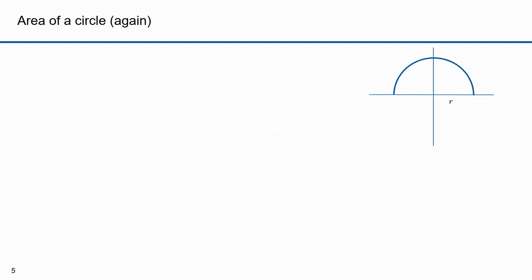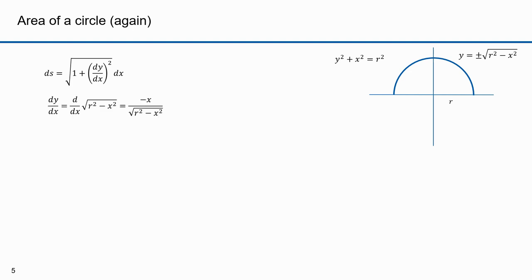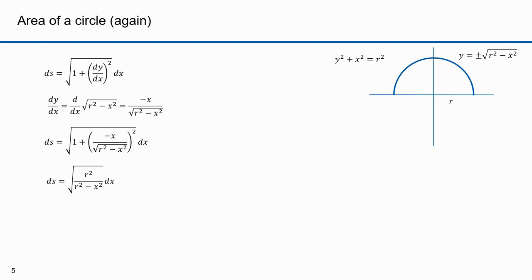Here I'll compute the surface area of a sphere with radius r. Starting with a semicircle defined by y² + x² = r², solving for positive y gives y = √(r² − x²). The arc length ds equals √(1 + (dy/dx)²) dx. dy/dx is d/dx of √(r² − x²) = −x/√(r² − x²), and substituting that gives ds = √(r²/(r² − x²)) dx.